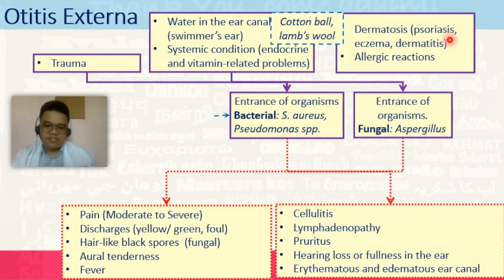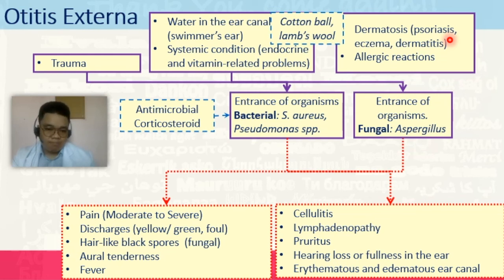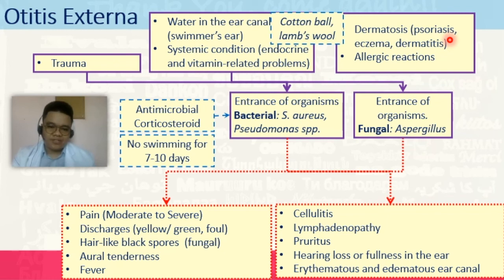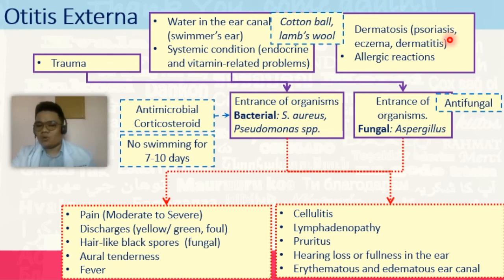For management, to prevent swimmer's ear, use a cotton ball with petroleum jelly so water will not enter your ear. For bacterial microorganisms, use antimicrobials combined with steroids. No swimming for 7 to 10 days is advised — in some cases, even a month — to prevent recurrence of otitis externa. If dealing with Aspergillus species, use antifungals such as fluconazole or ketoconazole, which may also be combined with steroids if there is significant inflammation, since steroids help address the inflammatory component.